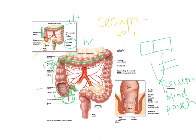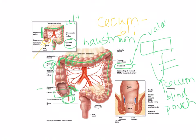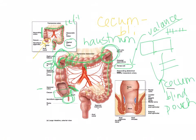The haustra are pouches created by the teniae coli, a band that's a remnant of a muscle layer. You can think of it like a curtain valance — where there's too much fabric pushed together on the rod, creating ruffles. The teniae coli is like the curtain rod, but it's muscle. At the bends in the colon, gas can get stuck — this is especially relevant in babies.